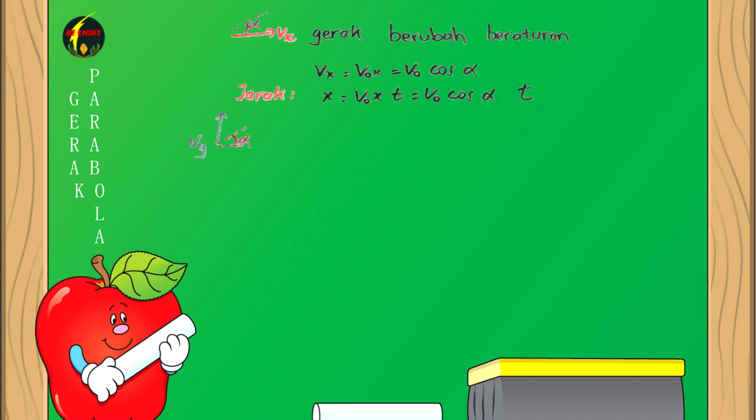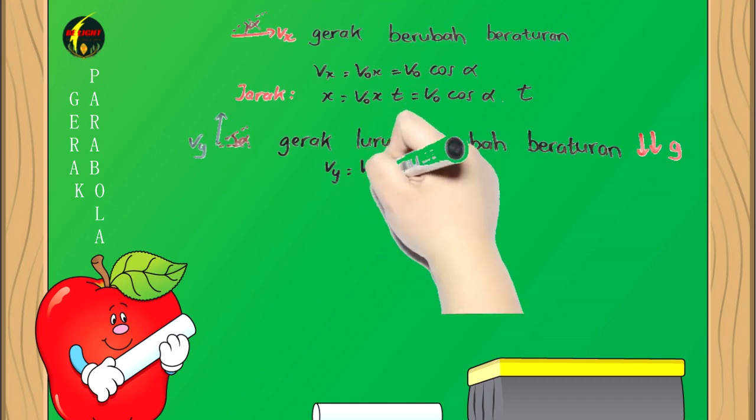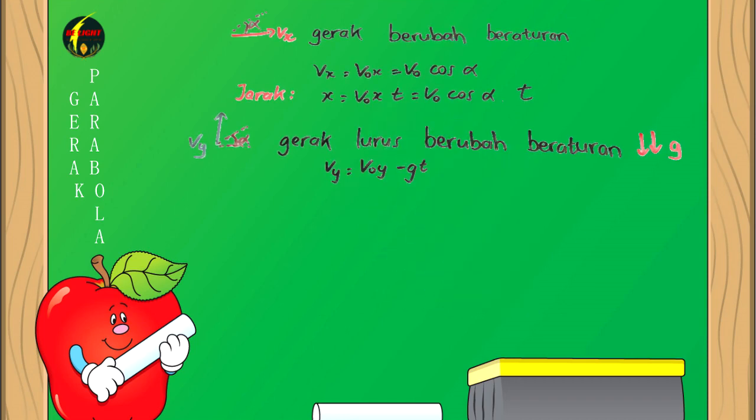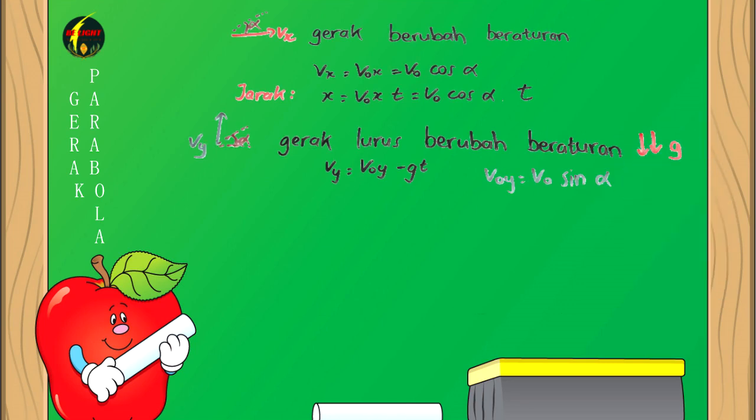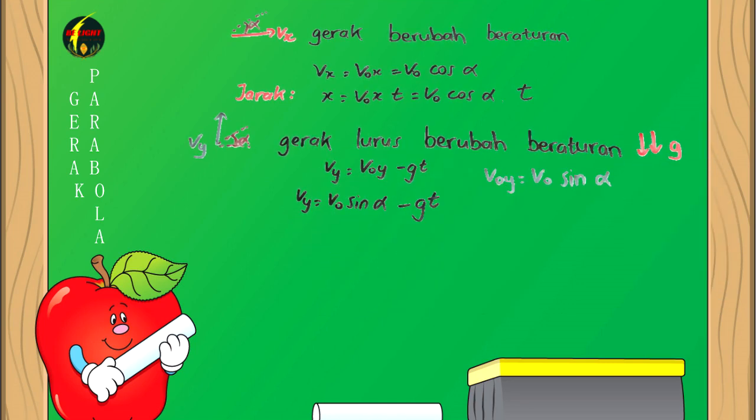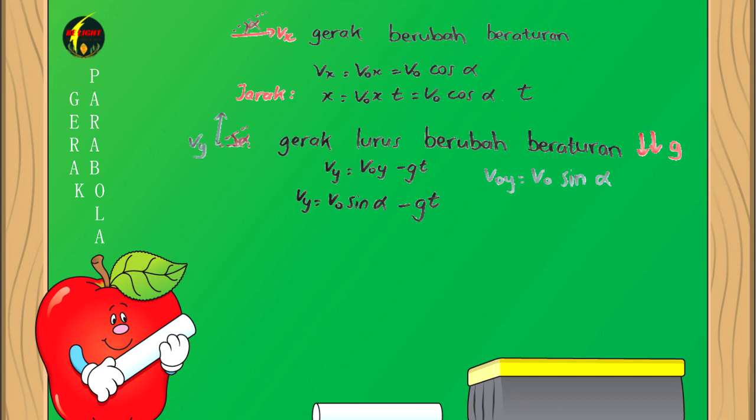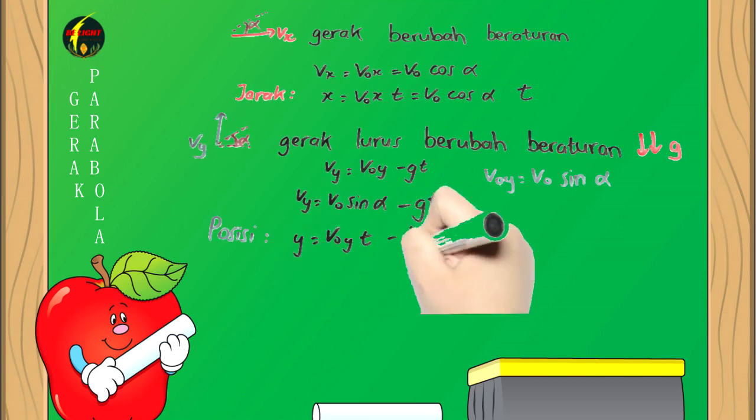Gerak pada sumbu Y atau gerak vertikal adalah gerak lurus berubah beraturan karena adanya gravitasi. Sehingga kecepatan memenuhi VY = V0Y - gT. Sementara V0Y = V0 sin α, sehingga VY = V0 sin α - gT.